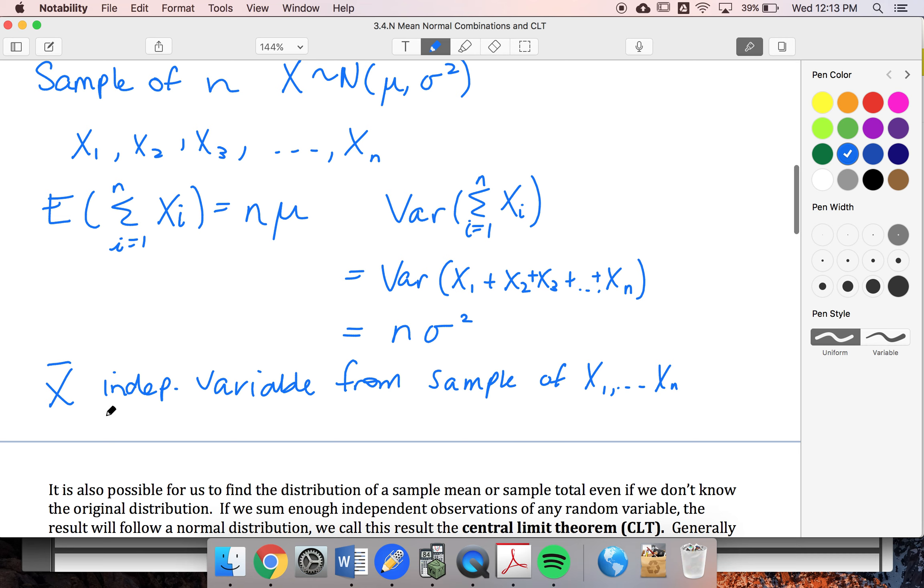So, E of x bar is going to be the average of my mean. So that's going to become that my E of x bar is going to be E of the sum of all my xi's over n. Well, that, of course, is just going to be 1 over n, sum of all my E of x's.